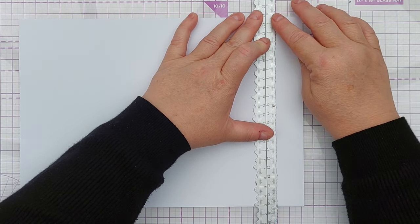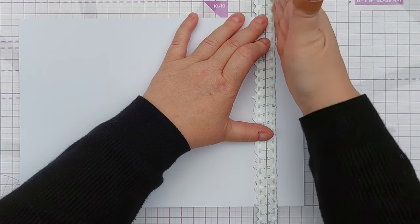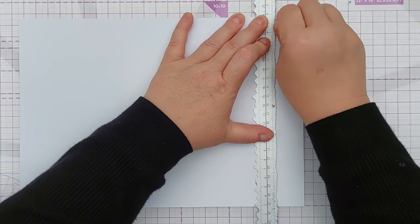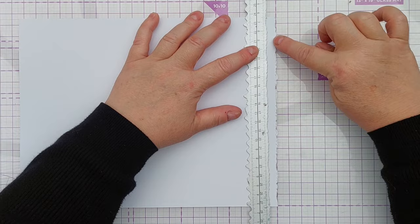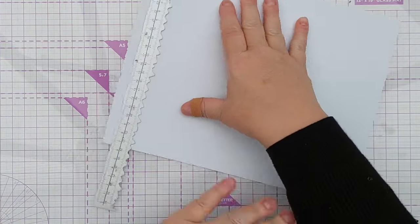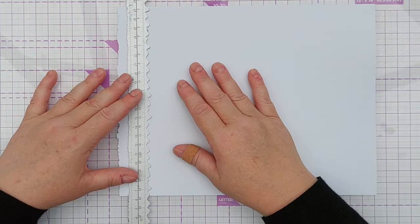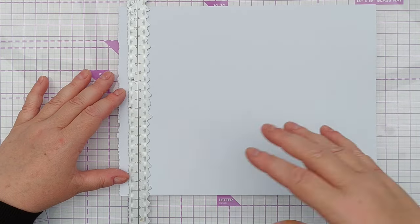So the way I've torn that, I've got the fluffy edge facing me. I want both of my edges to have the fluffy edge on the same side, so to do that I need to tear this side in a similar way to the way I tore the other side. So I've flipped my paper around, I'm going to line up my ruler again just to get these two lines parallel and then I'm going to tear it.